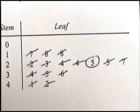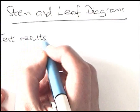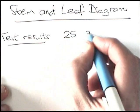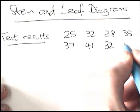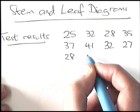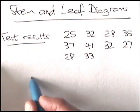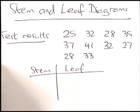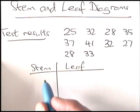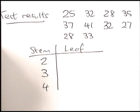Now let's go through an example. Copy down these test results underneath your heading: 25, 32, 28, 35, 37, 41, 32, 27, 28, and 33 — that's 10 values. To do these as a stem and leaf diagram you always need a heading with a stem column and a leaf column. All our numbers are in the twenties, thirties, or forties, so the stem will be 2, 3, and 4.